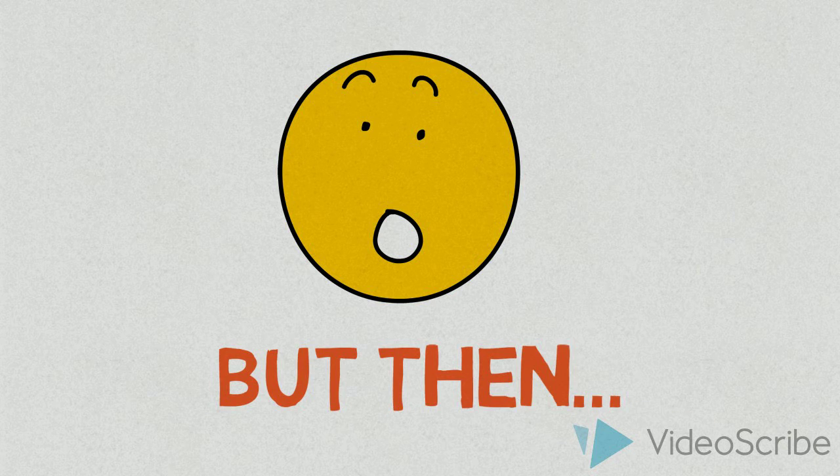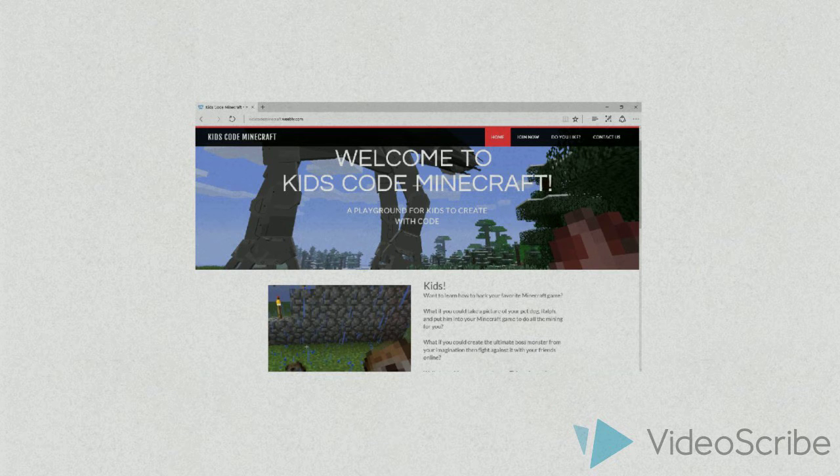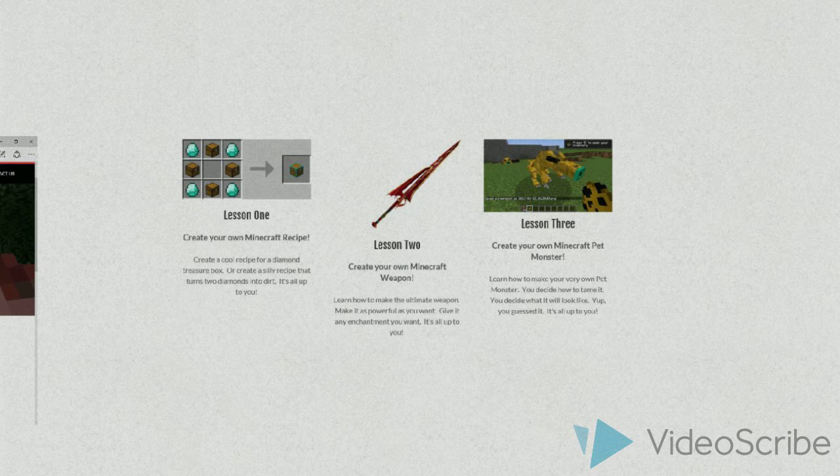But then, Tobin discovered a cool new website called Kids Code Minecraft. It had lessons on how to build his own Minecraft recipes, Minecraft weapons, and even his own Minecraft pet monster.